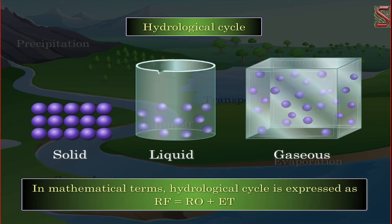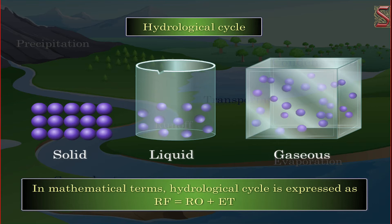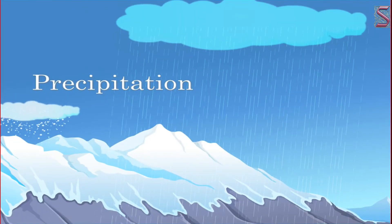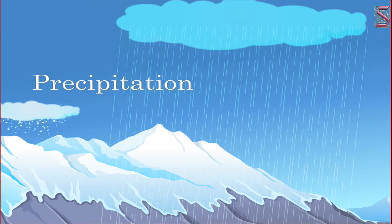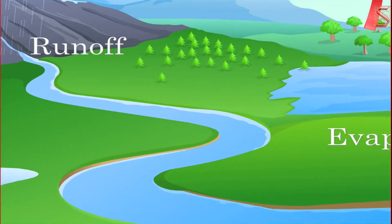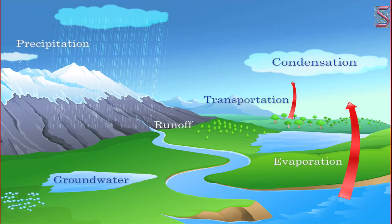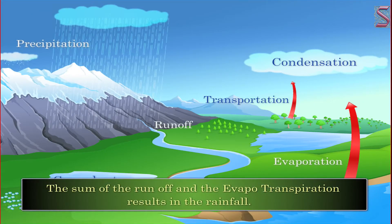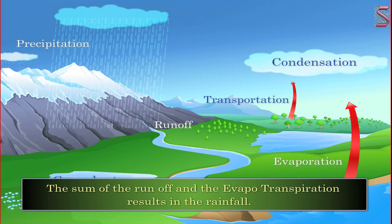In mathematical terms, the hydrological cycle is expressed as RF = RO + ET, in which RF refers to rainfall and includes all types of precipitation, while RO is runoff and ET is evapotranspiration. So, the sum of runoff and evapotranspiration results in the rainfall.